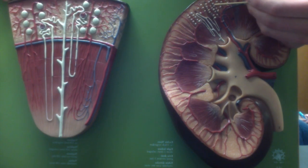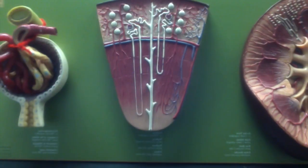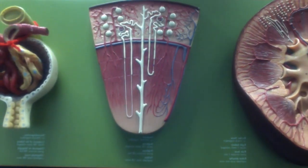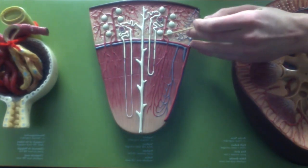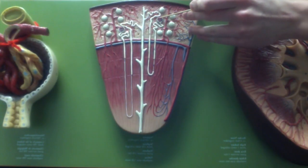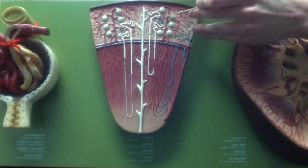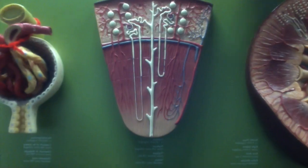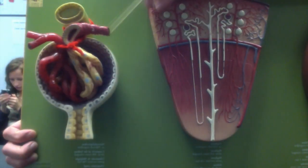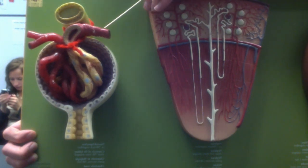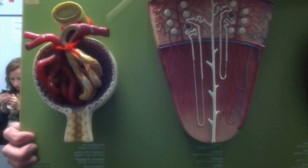Next, you'll notice that going into the renal corpuscles you have arteries. Here you're going to see an afferent arteriole. You'll notice it's thicker than the efferent arteriole because it has to deal with higher pressure.